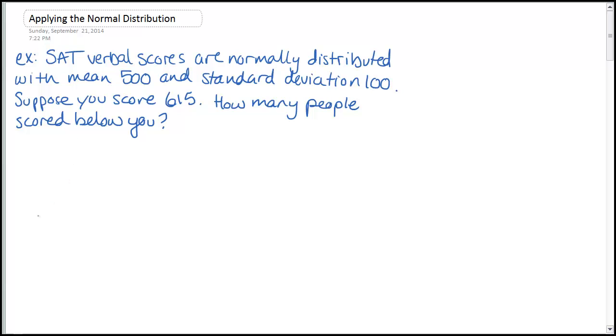Right away you should be thinking about drawing a picture here. We've got our bell curve. The mean, instead of being zero as we saw in the previous video with the standard normal curve, our mean is 500. So scores are going to be centered around 500. Some will be more, some will be less.